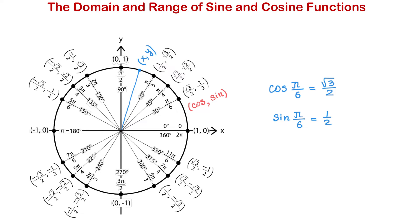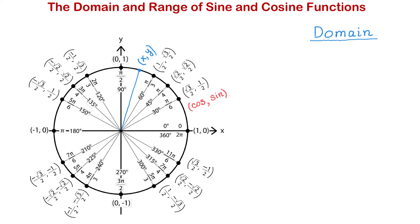The input for sine and cosine functions can be any real number from negative infinity to positive infinity. We use interval notation to write that the domain is any number from negative infinity to positive infinity. This means that we can use any real number as the input for sine or cosine functions and we will always get a value.